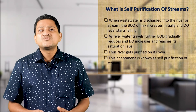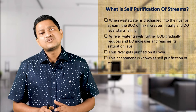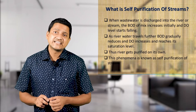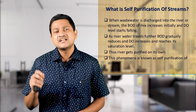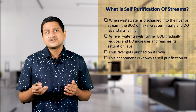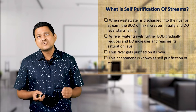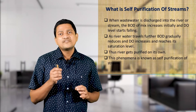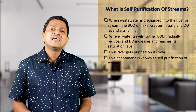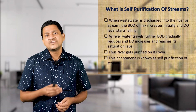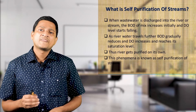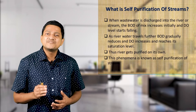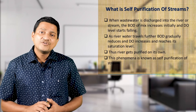When wastewater is discharged into a river or stream, the biochemical oxygen demand (BOD) of the mix increases initially and the dissolved oxygen (DO) level starts falling. As the waste enters the water system, biological oxygen demand increases, bacterial activity increases, and dissolved oxygen in the water falls. As the river water travels further, BOD gradually reduces and DO increases to reach its saturation level — that is called self-purification.